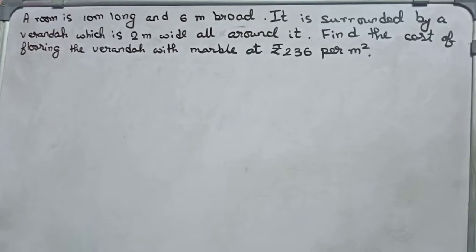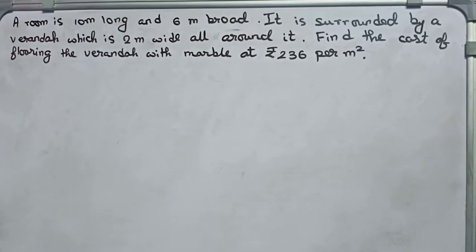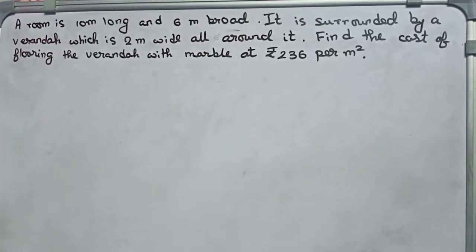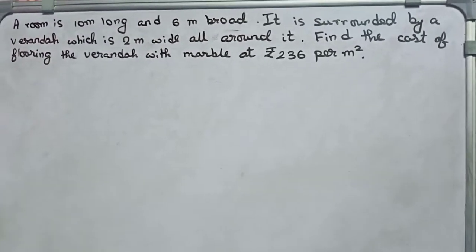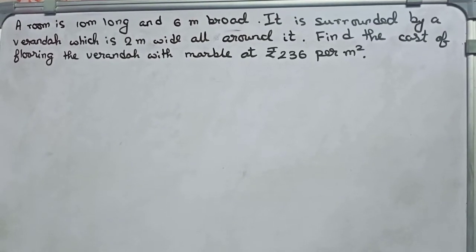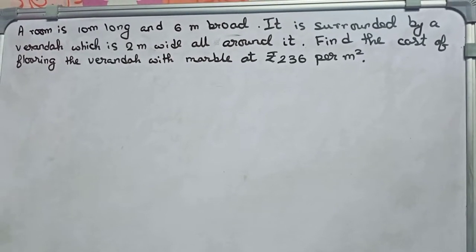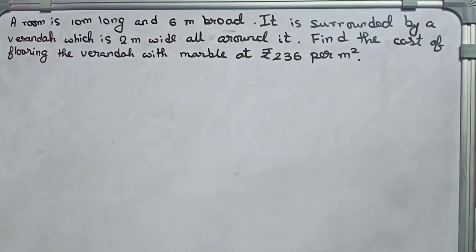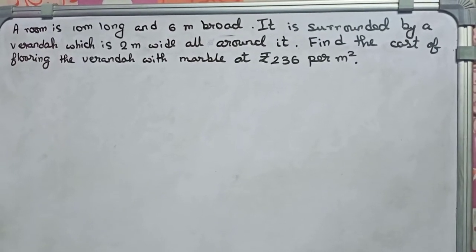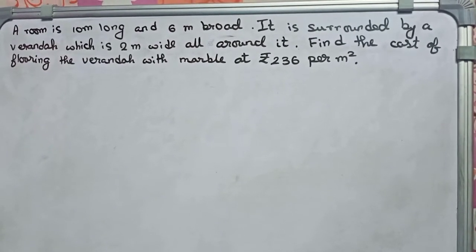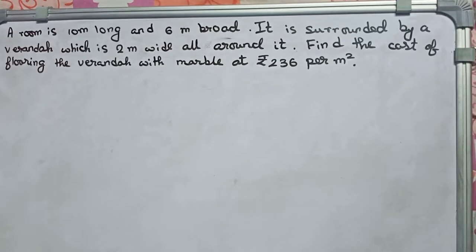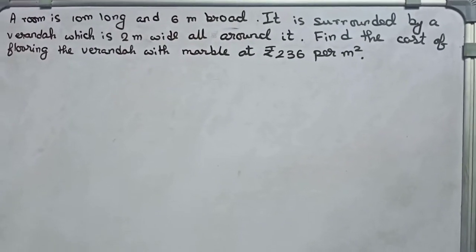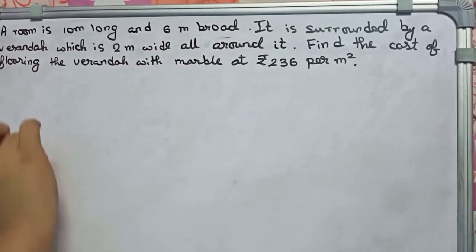Hello guys, welcome to this video. In this video our question is: a room is 10 meter long and 6 meter broad. It is surrounded by a veranda which is 2 meter wide all around it. Find the cost of flooring the veranda with marble at rupees 236 per meter square. So let's start — first you draw a rough diagram of the figure.